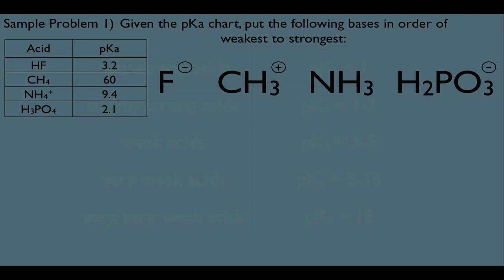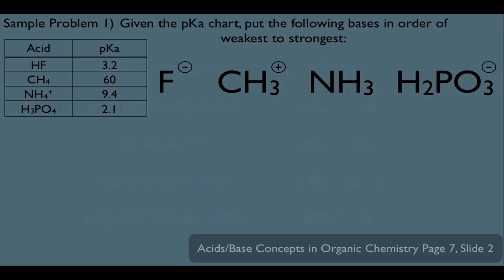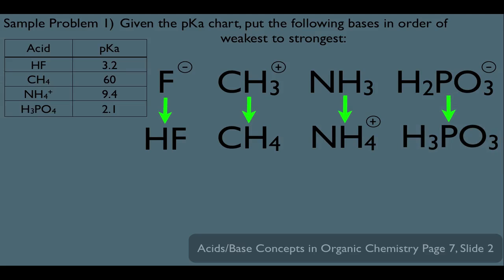Now, let's look at a sample problem here to put our skills to work. Sample problem 1: Given the pKa chart, put the following bases in order of weakest to strongest. There we have that chart. Remember, if Ka values are constant, then so are pKa values. Now, to answer this question, we need to convert our species in front of us here into acids. Because our chart doesn't list their particular pKa values, but if you notice, if we take the conjugate acid of each one of these, we can look them up on the chart. For instance, let's look at F-, converting him to his conjugate acid, we would get HF. To convert CH3- to his conjugate acid, that would give us CH4. Converting NH3 would get us to NH4+, and lastly, the H2PO3- would become H3PO3.